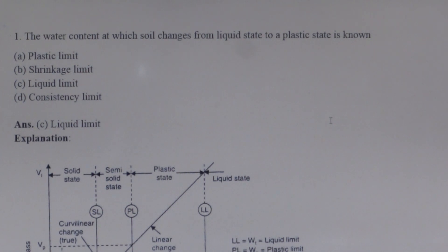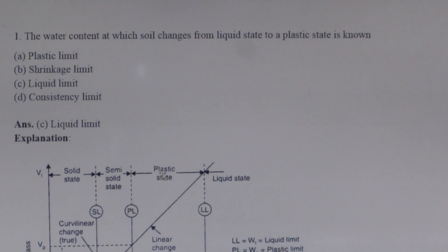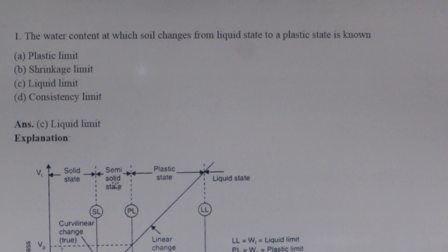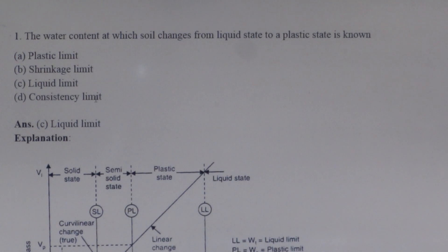Question number 1: The water content at which soil changes from liquid state to plastic state is known as liquid limit. The water content at which soil changes from plastic state to semi-solid state is known as plastic limit. The water content at which soil changes from semi-solid state to solid state is known as shrinkage limit. The water content at which soil changes from one state to another state is known as consistency limit.